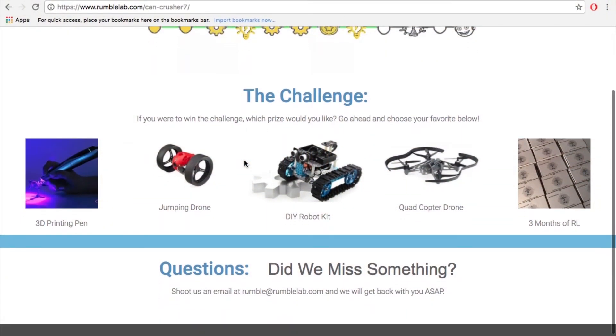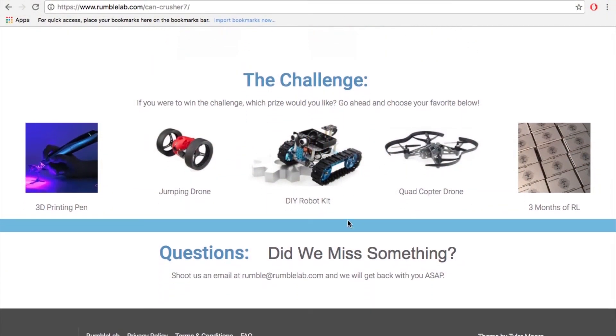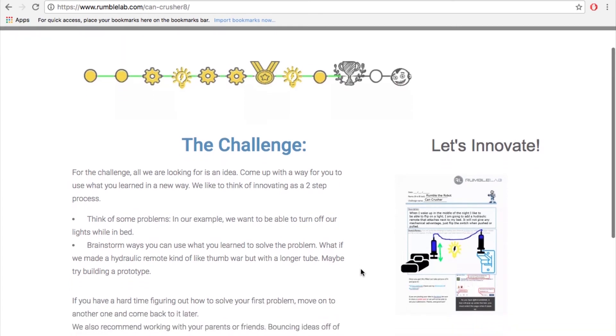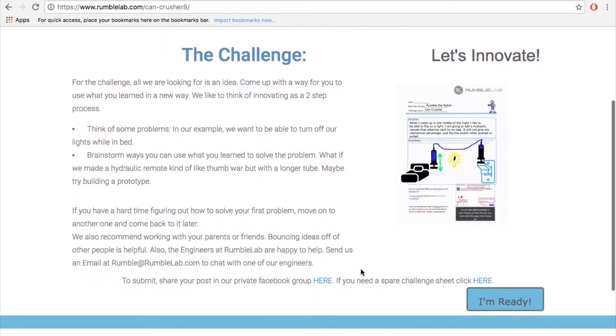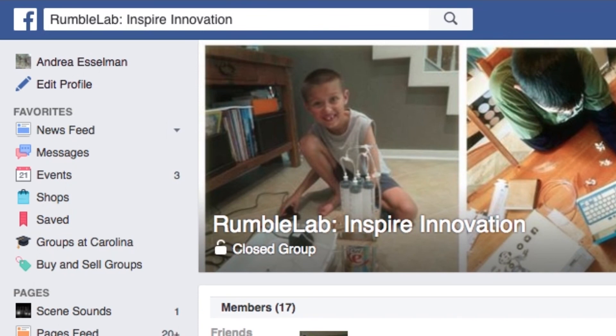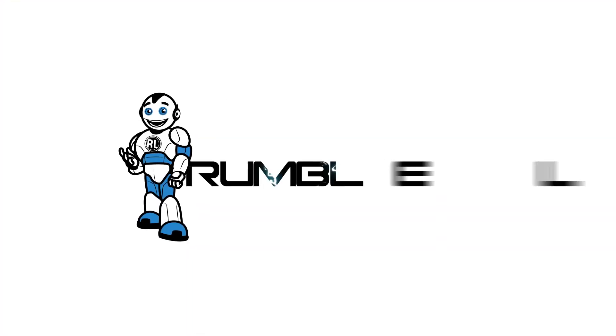And lastly, don't forget about our innovation challenge. We give away a cool prize like a drone every month for the innovation challenge. Think of how you could use something you learned with this crate to solve some sort of problem. Maybe you'd like to make a can crushing station by the trash can so you don't have to take the trash out as often, or maybe you turn hydraulic thumb war into a light switch remote so that you can turn on the lights while in bed. Then to enter, ask your parents to share your idea with us on social media. Have fun, we can't wait to see what you come up with.